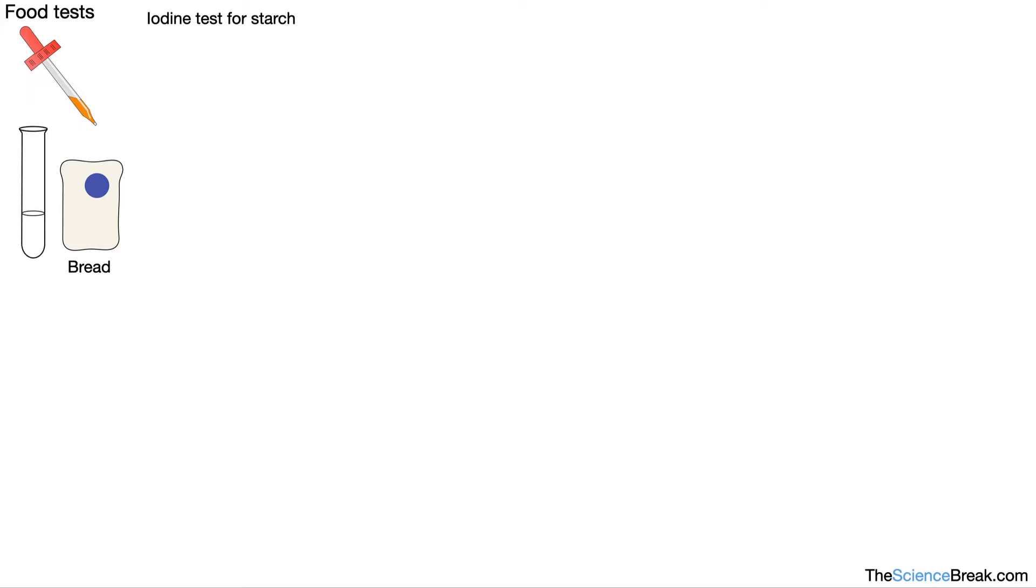We might also have a starch suspension, that's starch in some water. We can do the same test and see the same color change. So in order to do this, we add iodine solution which is orange to our sample. The color change from orange to blue-black shows that starch is present.